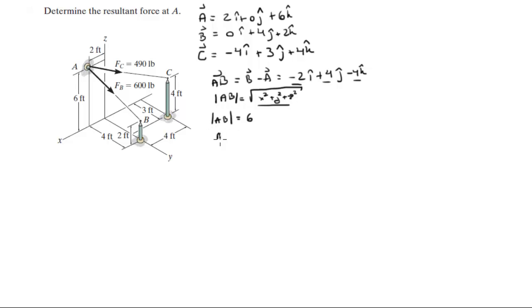Now if you divide the vector AB by its magnitude you can find the unit vector AB. The unit vector comes out to be negative 0.333i plus 0.667j minus 0.667k.